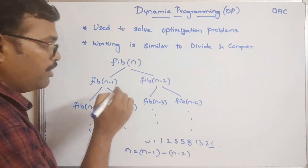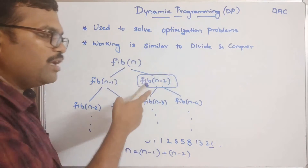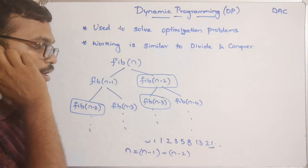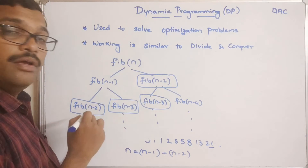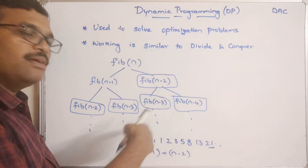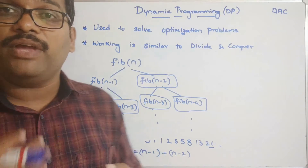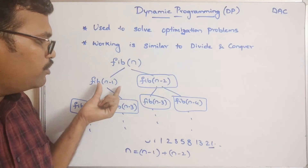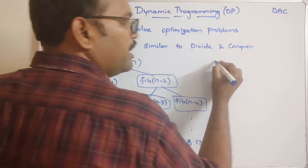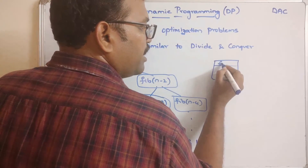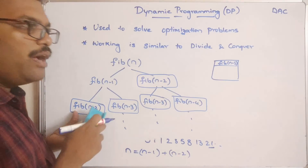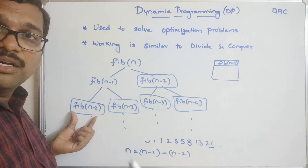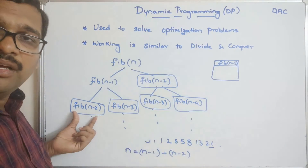You can observe that F(n−2) is being solved here, and the same thing is being solved again in another branch. Similarly, F(n−3) is solved in one place and also solved somewhere else. That means we are repeatedly solving the same sub-problems multiple times, even with recursion. So instead, if we store the solution for F(n−2) in a table, whenever it is required again, we need not execute the same thing — we simply get the value from memory because it was already solved and stored.